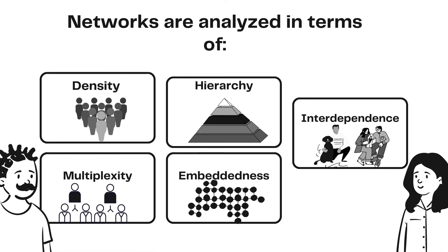So, how do we determine networks? Networks are analyzed in terms of five things: density, hierarchy, embeddedness, interdependence, and lastly, multiplexity. First, let's discuss density. Density tells us how concentrated or crowded something is — for example, the different populations in different networks. The more the number, the more the density.